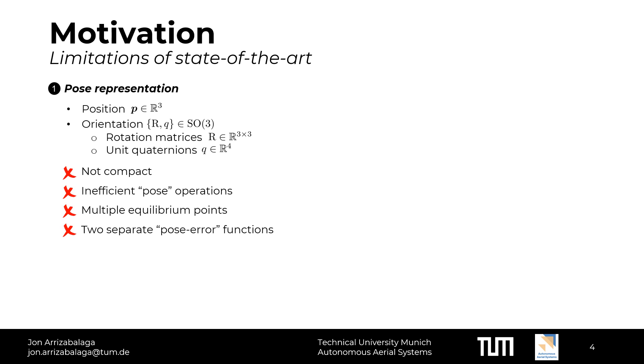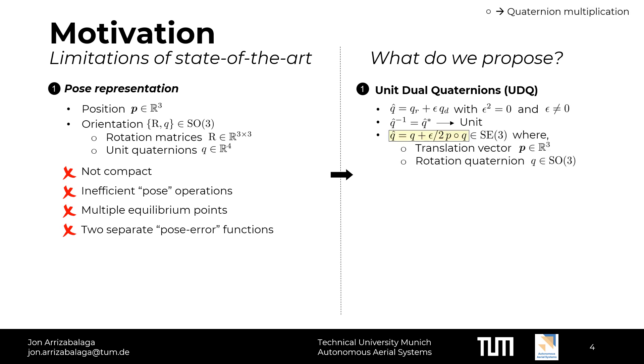To overcome these limitations, we propose to use a less popular yet full of potential SE3 parameterization: unit dual quaternions. A dual quaternion consists of a standard quaternion whose components are given by dual numbers. For a dual quaternion to be unit, its inverse needs to equal the conjugate. Just as unit quaternions represent rotations, unit dual quaternions describe three-dimensional transformations, in other words, translations as well as rotations.